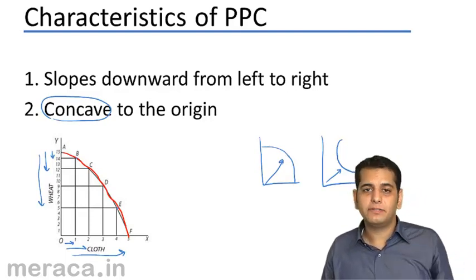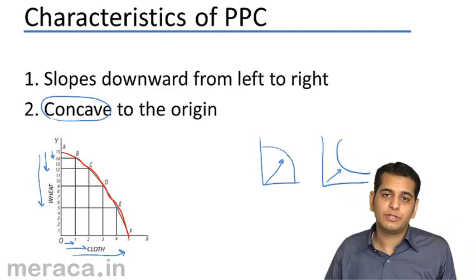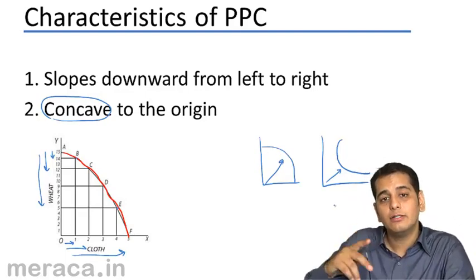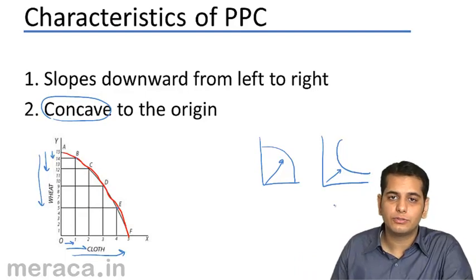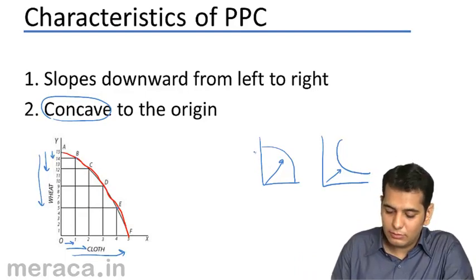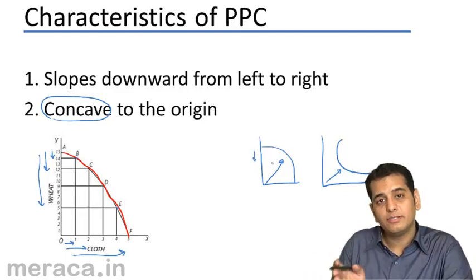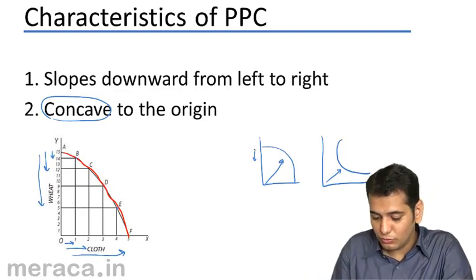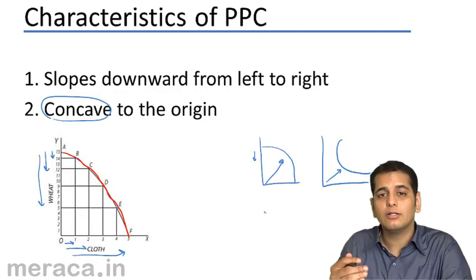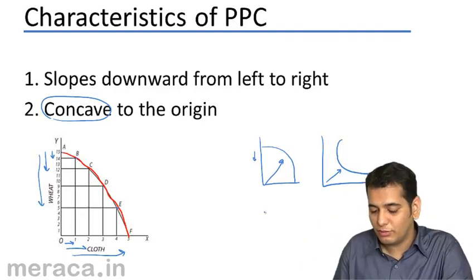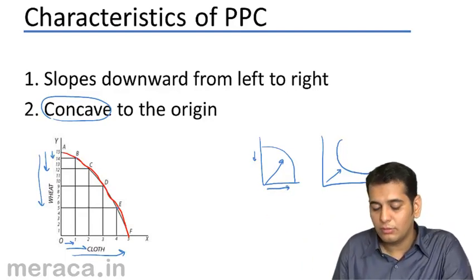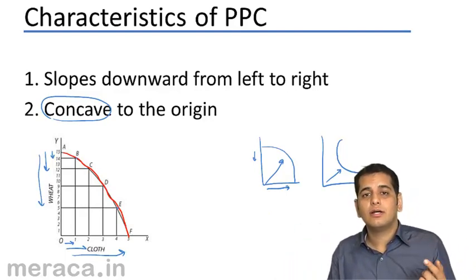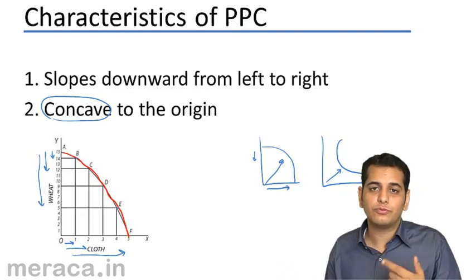Now, let's understand why PPC takes the concave shape. Because in PPC, we are substituting the units. In place of one good, other good is produced. So, the production of a single good goes down. The production of other good keeps on moving up. Now, but this happens at a faster rate as we move down.